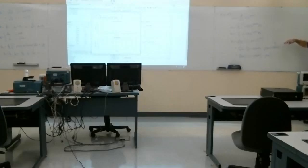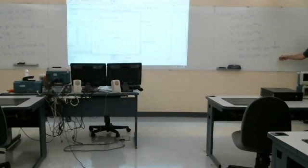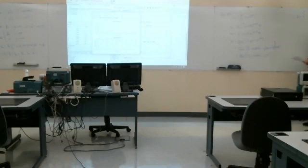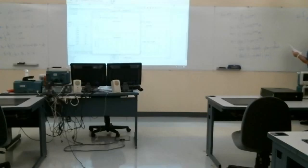The Xₙ coefficients are complex, unlike the real coefficients in the trigonometric or compact forms. For n = 0, X₀ = 1/4. For n odd, Xₙ = 1/(π²n²) − j·1/(2πn). For n even, Xₙ = −j·1/(2πn). Numerically: X₀ = 0.25, X₁ = 0.189∠−57.5°, X₋₁ = 0.189∠+57.5°, X₂ = 0.080∠−90°, X₋₂ = 0.080∠+90°.